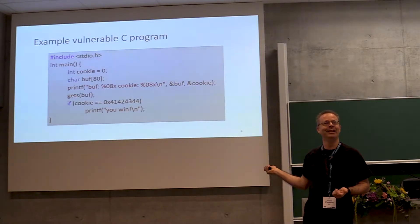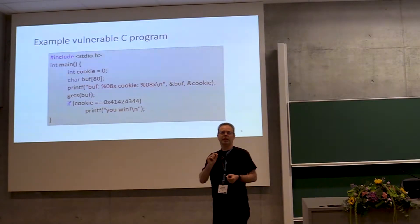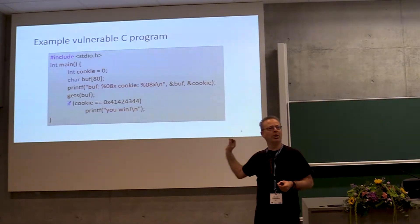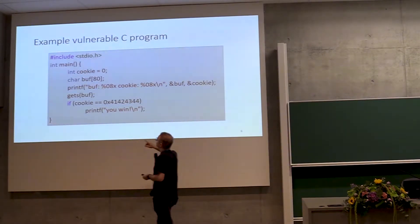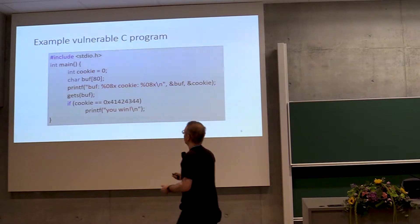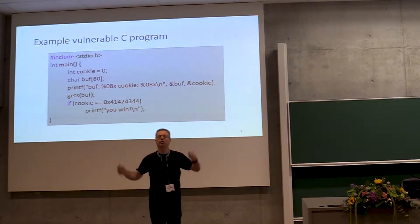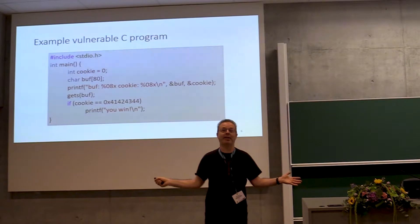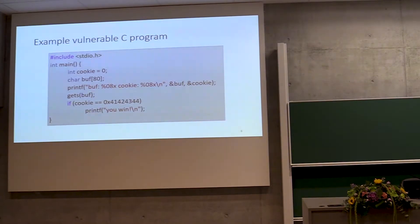Who immediately sees what input to provide to make it print 'you win'? About four or five people. For those who haven't seen it, let me show you — it's interesting to understand this very simple example deeply because it's the essence of what can go wrong. Of course you would never expect this to happen: you declare a local variable, assign it zero, never do anything with it, then test whether it's some weird number — so this test should always fail. But the program has a memory management vulnerability, and as a consequence what you expect will not hold.